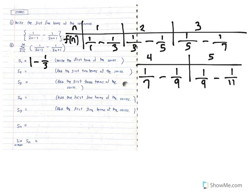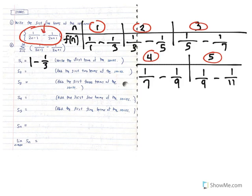Here we have an activity for the first two objectives. Number one: write the first five terms of the sequence by substituting n equal to 1, 2, 3, 4, and 5 into the formula for the nth term. The formula has two fractions that are subtracted, so for each fraction you substitute the value of n, giving us the terms of the sequence.